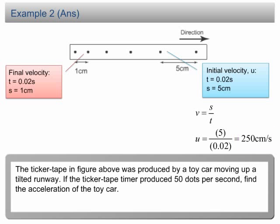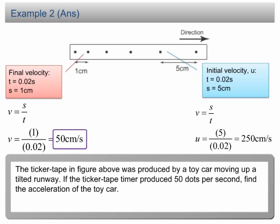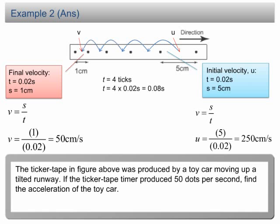For the last tick, the time is also 0.02 seconds, but the displacement is 1 cm. Therefore, the final velocity v = 1 cm / 0.02 s = 50 cm/s. In order to find the time taken, we need to decide where u and v are. As mentioned in the previous slide, u and v are in the middle of the two measured intervals. Therefore, the time between u and v is 4 ticks, equal to 0.08 seconds.